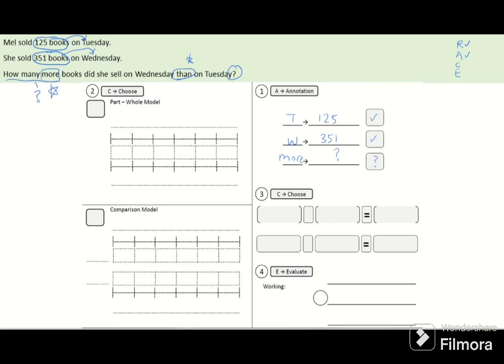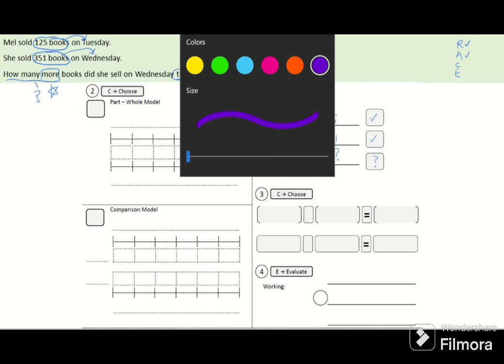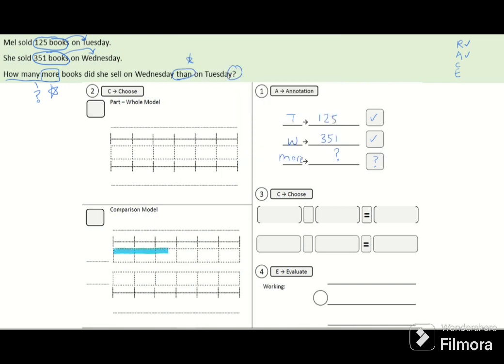I shall draw the model now. She sold more books on Wednesday than on Tuesday, so I'm going to draw a longer bar for Wednesday and a shorter bar for Tuesday, beside each other.